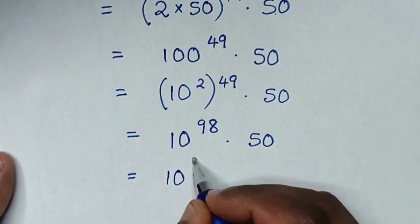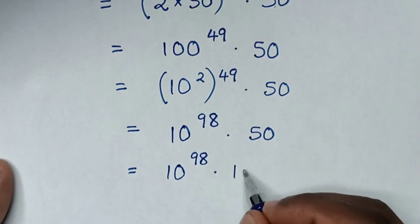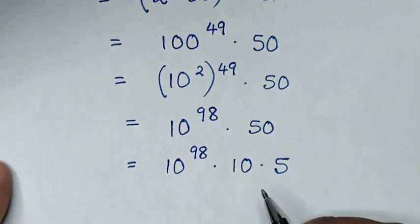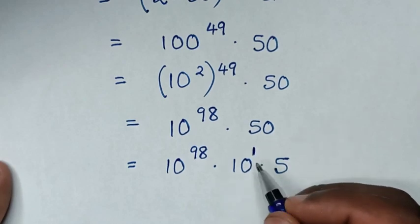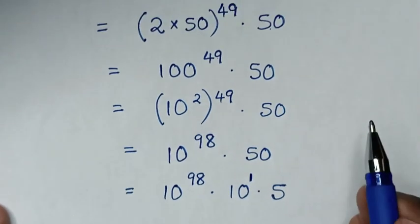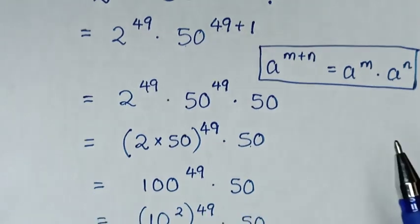in here, it will be 10 times 5. Now 10 is same as 10 power of 1. Then in here is multiplication of exponents with same base but different powers. So we'll apply this exponential rule, whereas it will be addition of powers.